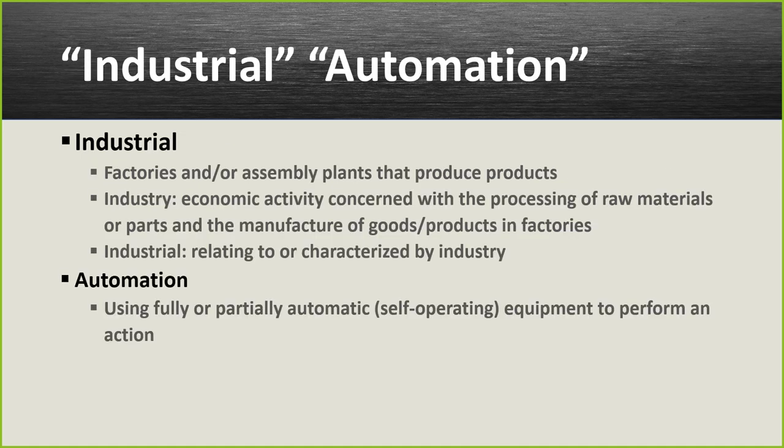Let's talk about the concept of industrial automation. 'Industrial' refers to factories or assembly plants that produce products — economic activity concerned with the processing of raw materials or the manufacture of goods in factories. We're talking about environments where we take parts received through supply chain, assemble them, possibly manufacture some of our own, and create an end product or a component that another organization uses to build an end product.